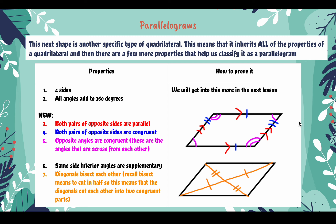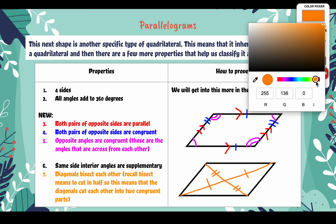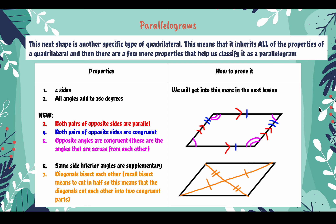A really important property that the Regents loves to use is that the diagonals bisect each other. Bisect means to cut in half — to cut into two congruent parts. In the second diagram, the two diagonals go from corner to corner, and at the intersection point both diagonals are split into congruent pieces. We use a singular tick mark for one diagonal and double tick marks for the pieces of the second diagonal.